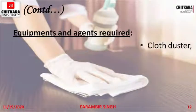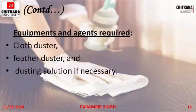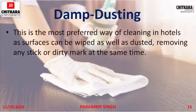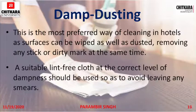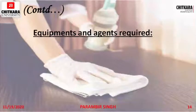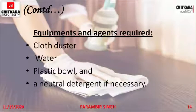Equipment and agents required for dusting are cloth dusters, feather dusters, and dusting solution if necessary. Next is damp dusting. This is the most preferred way of cleaning in hotels as surfaces can be wiped as well as dusted, removing any sticky or dirty marks on the same item. A suitable lint-free cloth at the correct level of dampness should be used so as to avoid any smearing. Equipment and agents required for damp dusting include cloth dusters, water, a plastic bowl, and a neutral detergent if necessary.